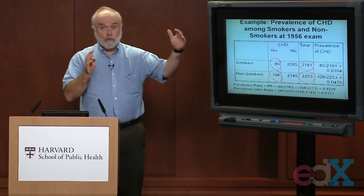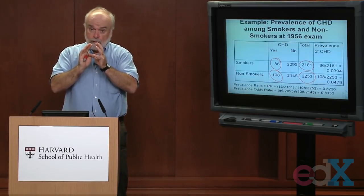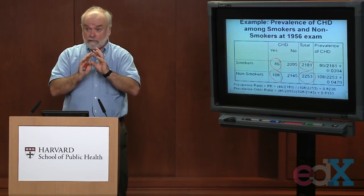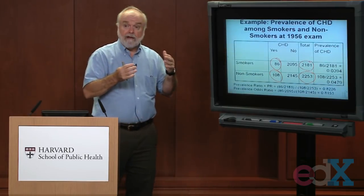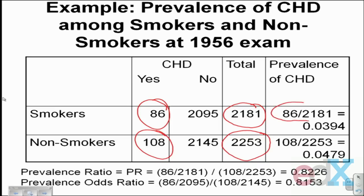We're not following people for 24 years to see who develops heart disease. We're just asking at one point in time: were you a smoker, yes or no? And did you have coronary heart disease at that point in time, yes or no? With these types of cross-sectional data, we can measure the prevalence of existing coronary heart disease among all smokers. There are 86 smokers out of the 2,181 total smokers who had heart disease.